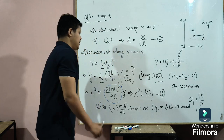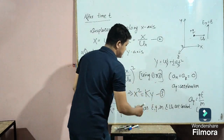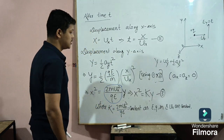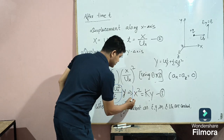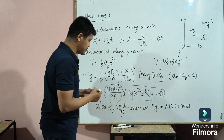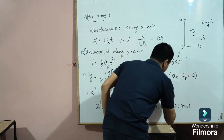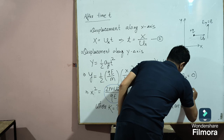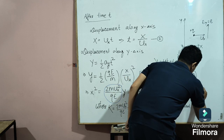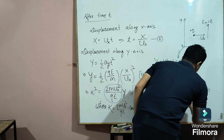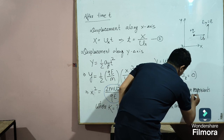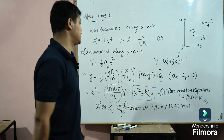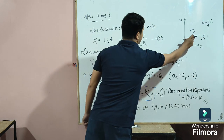So we can write X squared equals K times Y — this is equation number 3. This equation represents a parabola. That is what we needed to show — the path of this charged particle is a parabola.